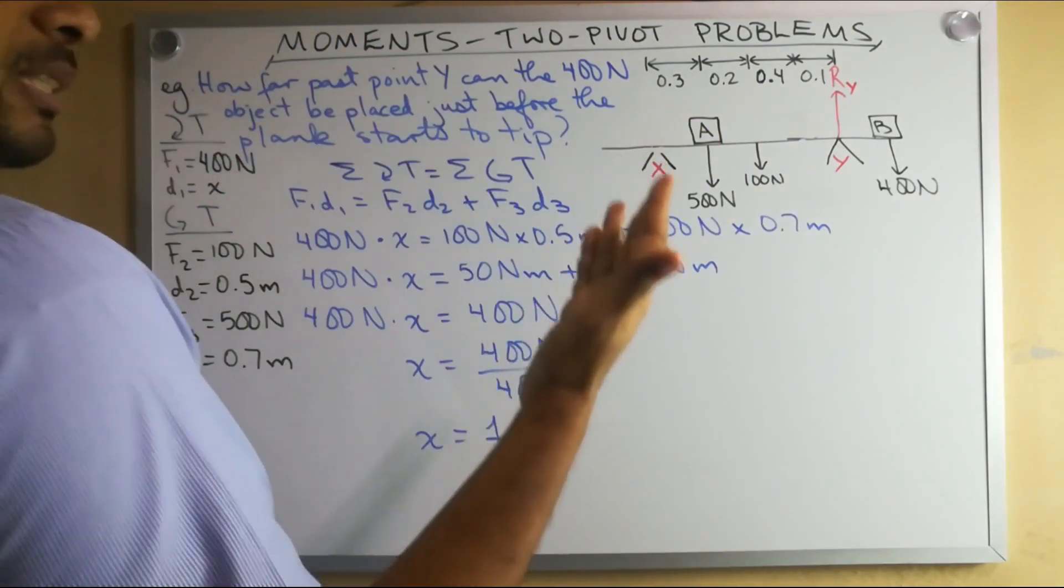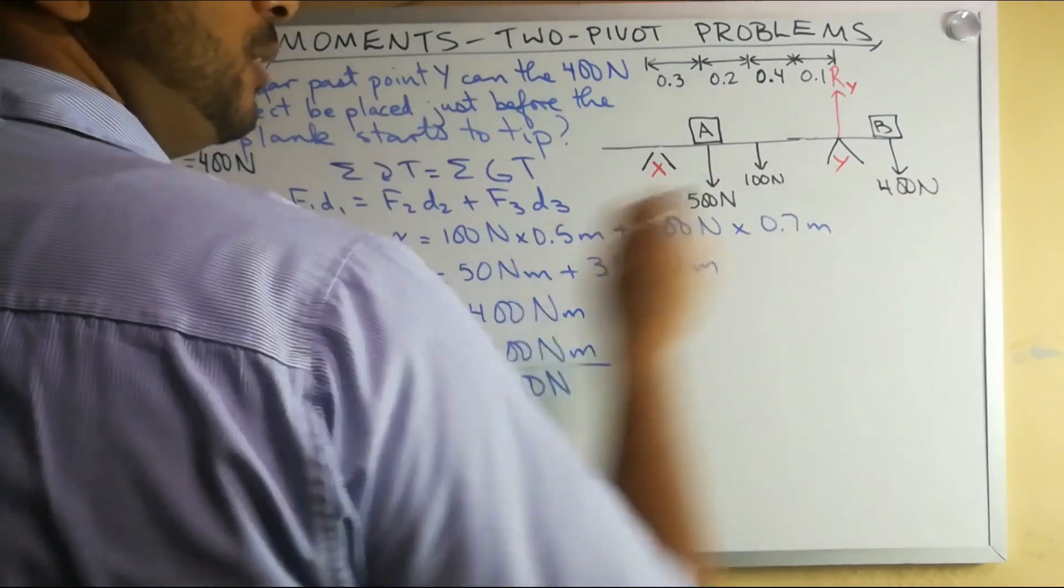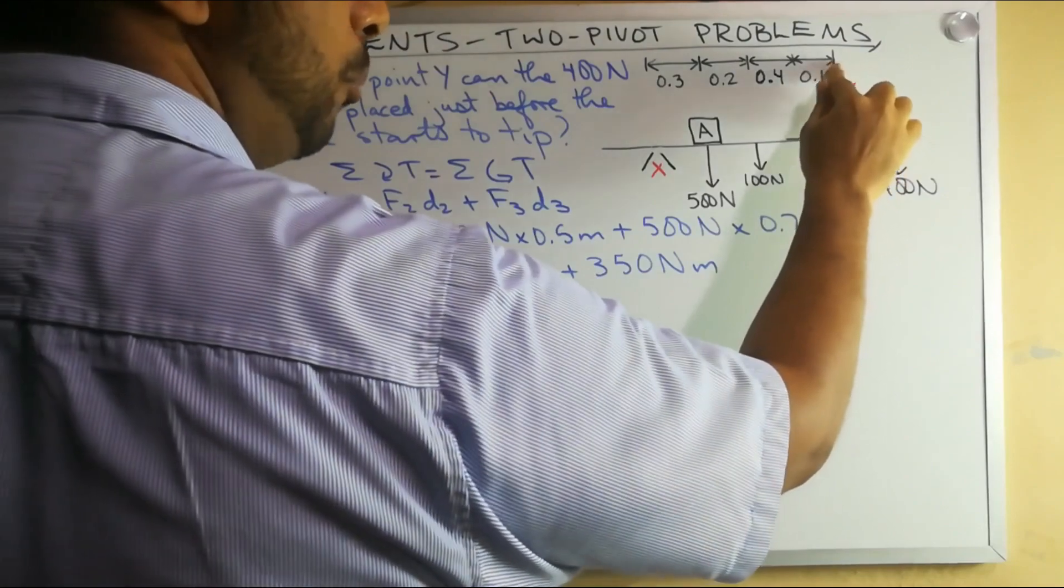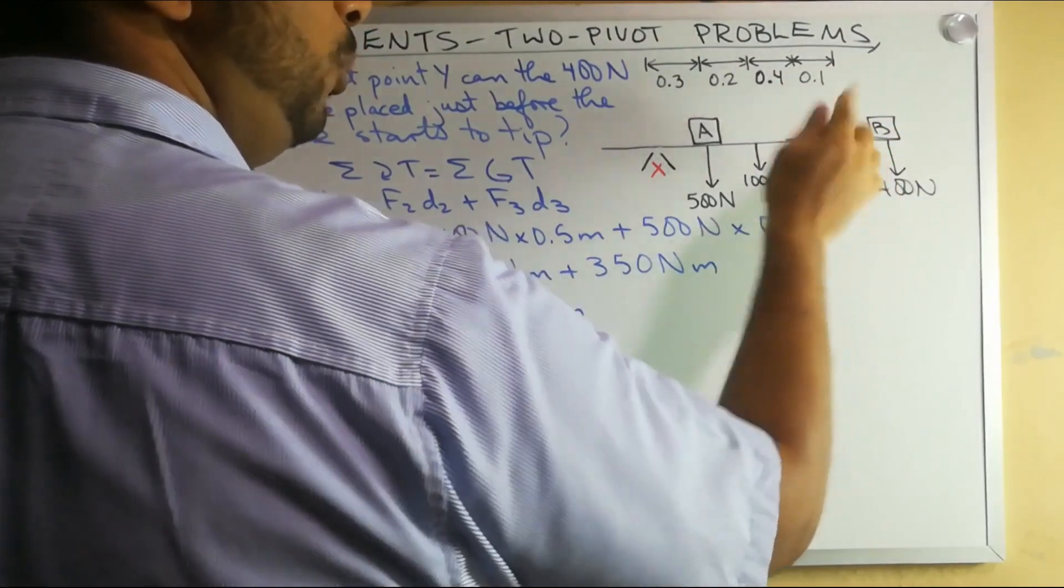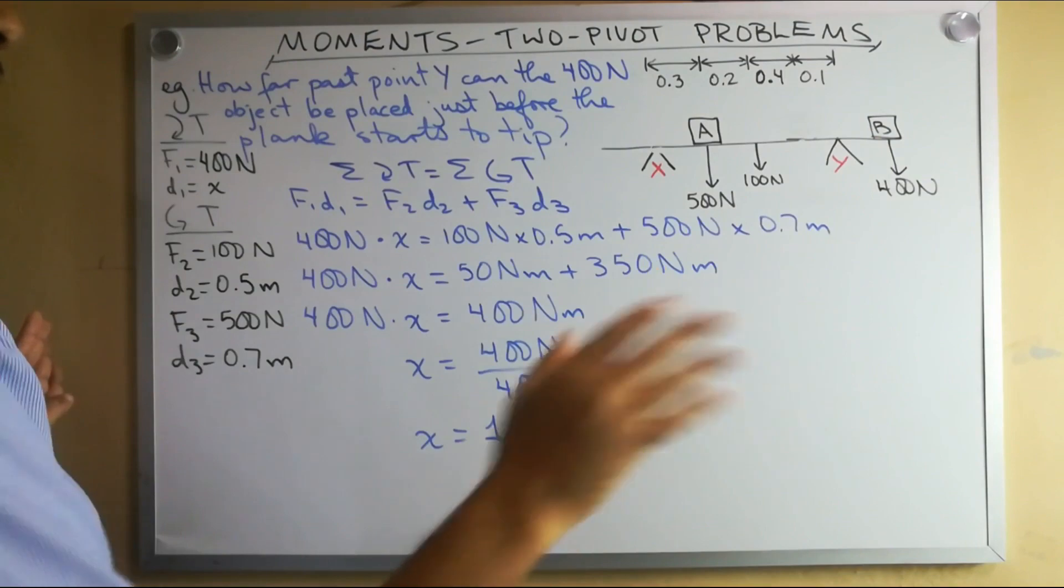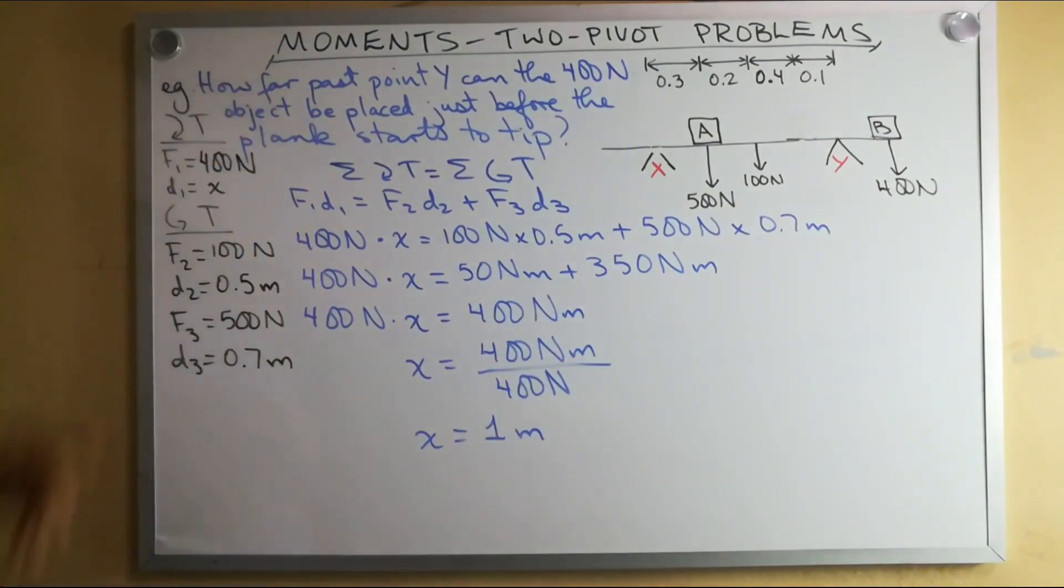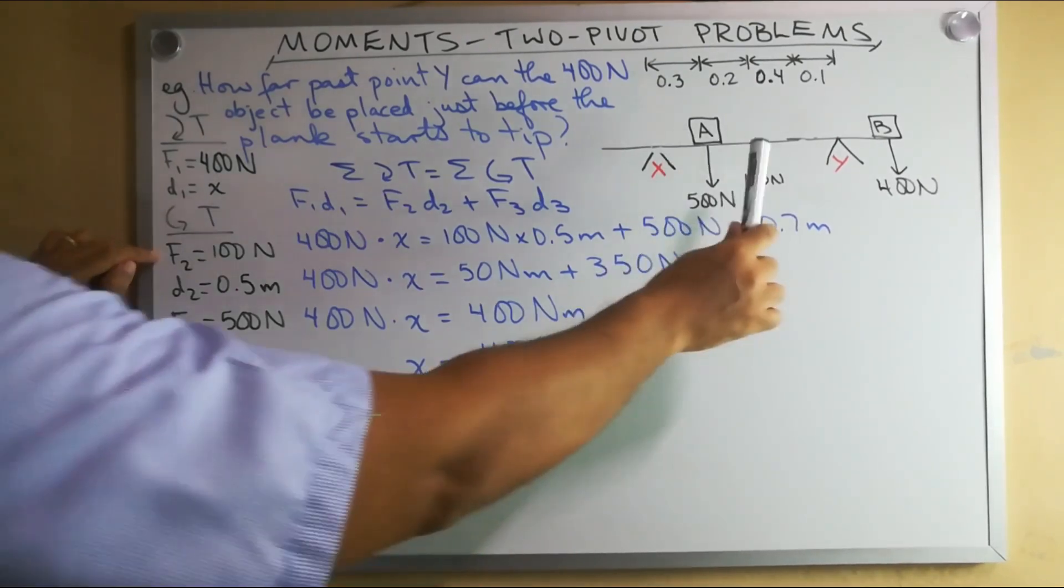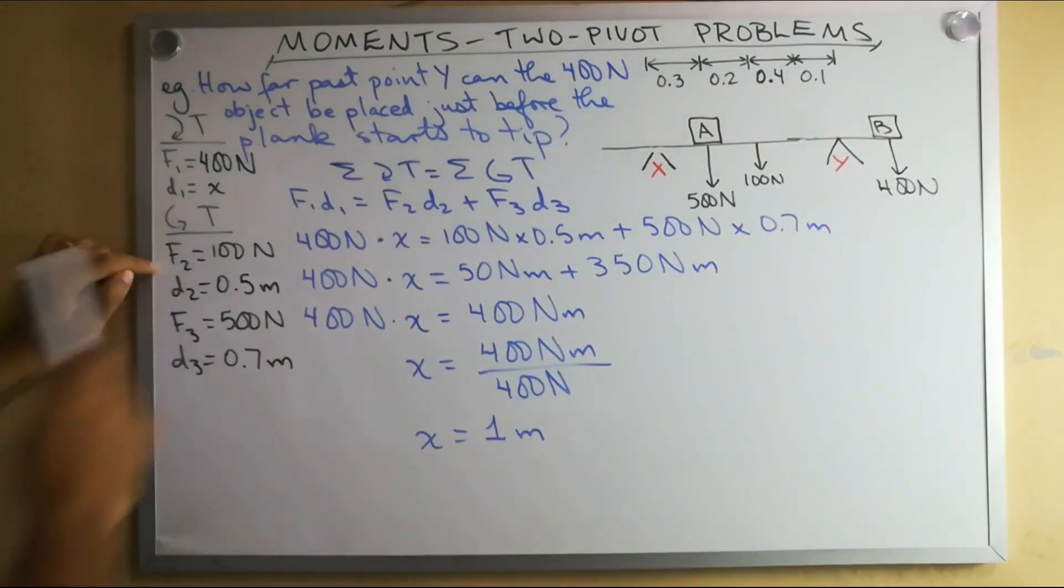If we consider the exact point where it starts to tip over, then that means the plank will no longer be in contact with pivot X. If it is no longer in contact with pivot X, then this reaction force R sub X is no more. Because remember, that is a normal reaction force, a contact force. So if it tips and is no longer in contact, then we do not have to consider R sub X anymore. We just have these three forces. If this is now our only pivot, again R sub Y is zero distance away from pivot Y, we do not have to consider as well. So we only need to look at our clockwise moments and our anti-clockwise moments.